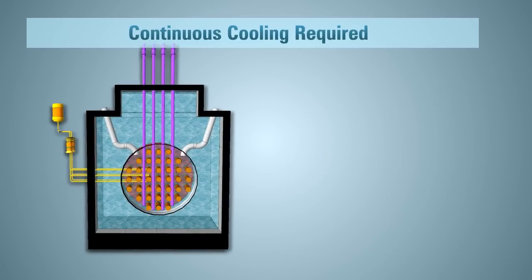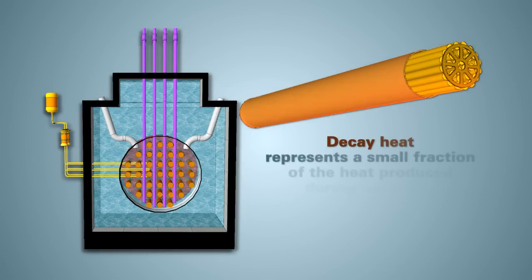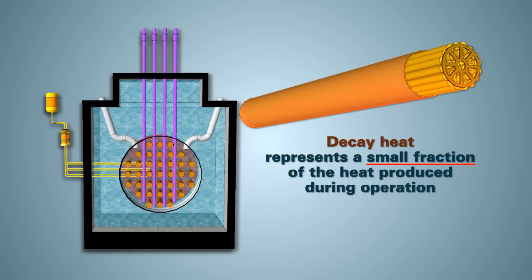Even though the reactor is shut down, the fuel inside the reactor continues to produce heat and needs to be cooled. This heat is called decay heat and represents a small fraction of the heat produced during normal operation.